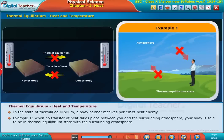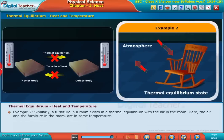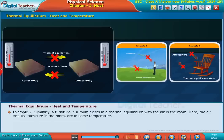Example 2: Similarly, furniture in a room exists in thermal equilibrium with the air in the room. Here, the air and the furniture in the room are at the same temperature.